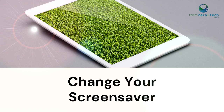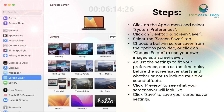Change your screensaver. Click on the Apple menu and select System Preferences. Click on Desktop and Screen Saver, then select the Screen Saver tab. Choose a built-in screensaver from the options provided, or click on Choose Folder to use your own images as a screensaver. Adjust the settings to fit your preferences, such as the time delay before the screensaver starts and whether or not to include music or sound effects. Click Preview to see what your screensaver will look like, then click Save to save your screensaver settings.